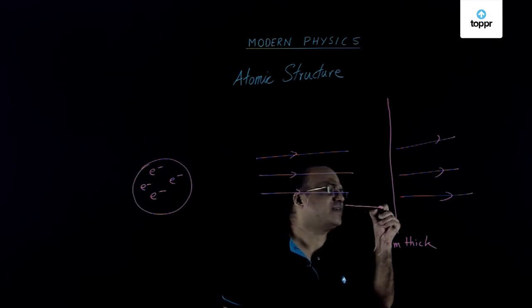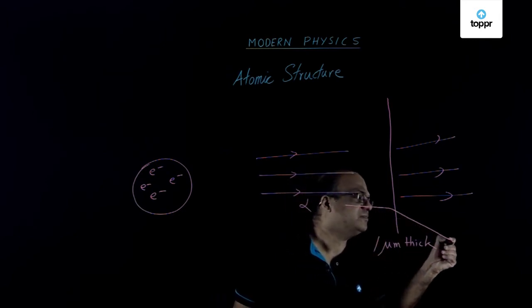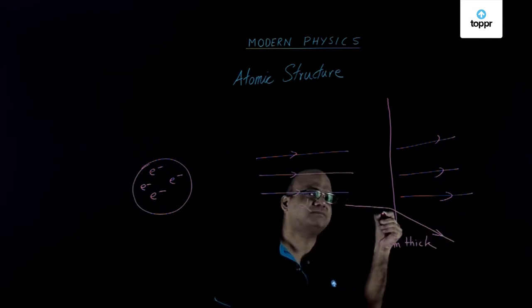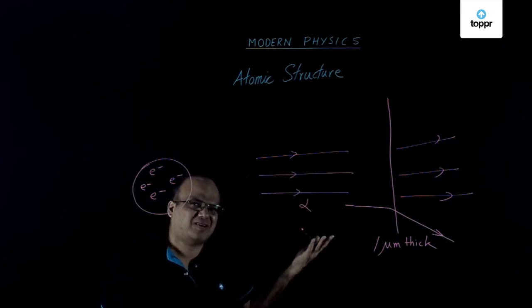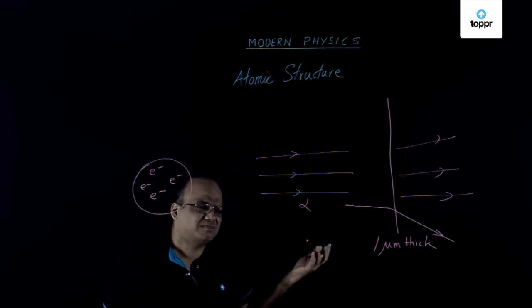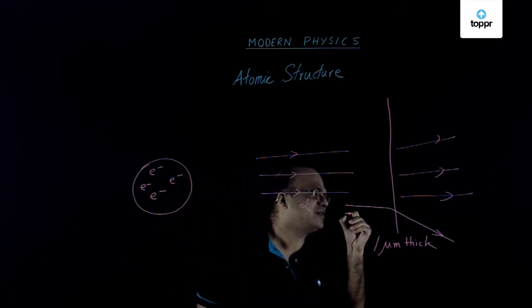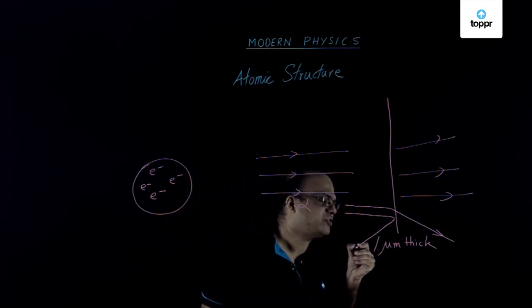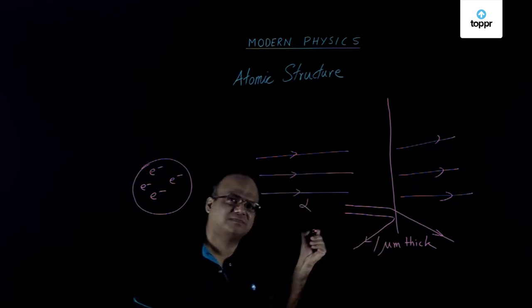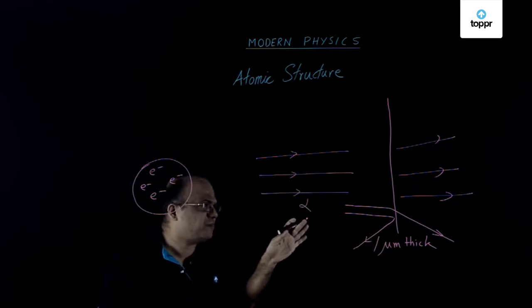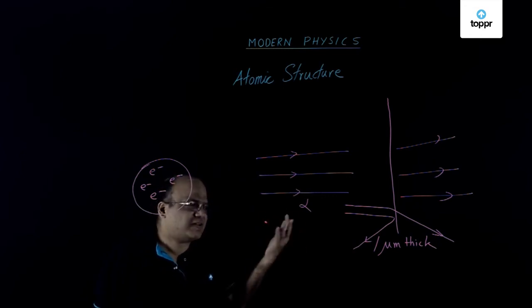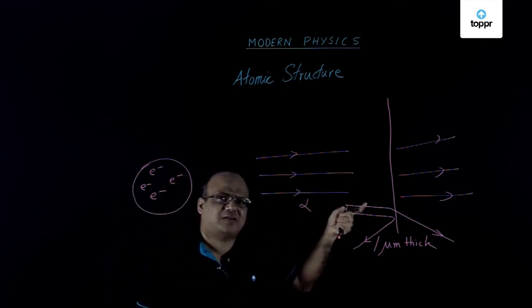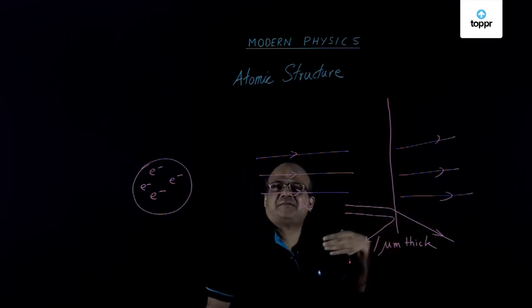Some alpha particles were scattered appreciably. Very few, 1 in 8000 alpha particles suffer deflection more than 90 degrees. This was very surprising. Rutherford said that this is like you fire a bullet at a tissue paper. It comes back and hits you.